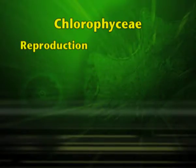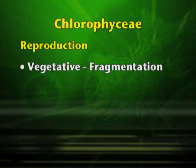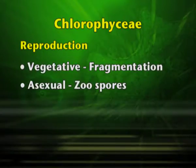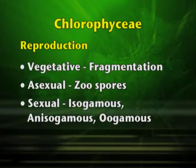Reproduction in Chlorophyceae may be by vegetative means, that is by fragmentation; by asexual means, it may be by zoospores; and sexual reproduction may be isogamous, anisogamous, or oogamous.